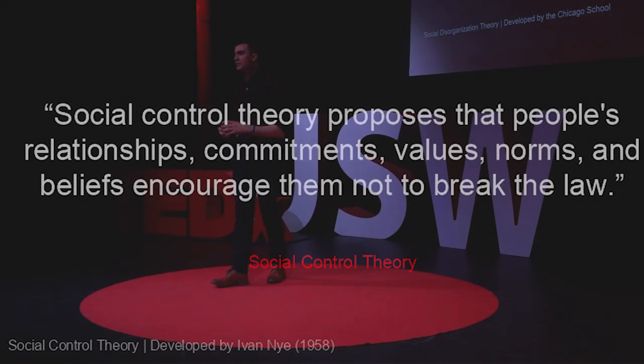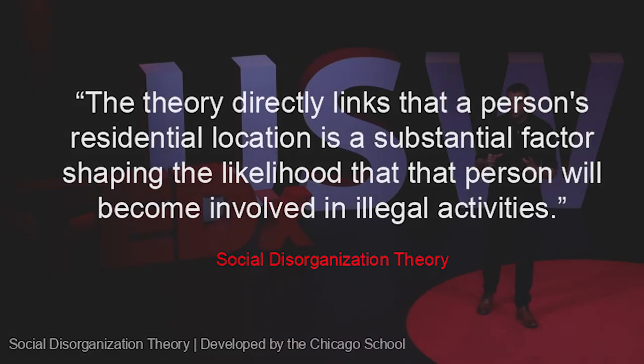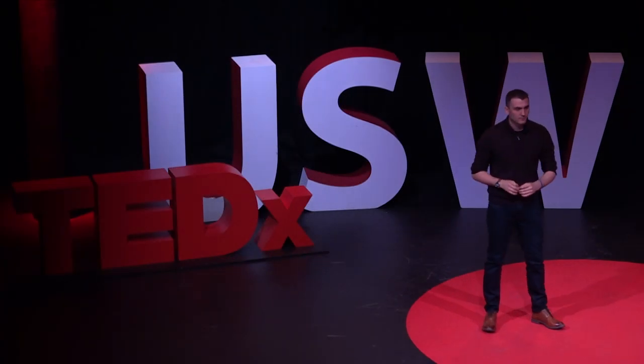And then finally, we're going to look at social disorganization theory. What this theory states is that location is key. If someone lives or works in an area known for a specific type of crime, this theory states that intrinsically, by just being there, you're more likely to commit crime.